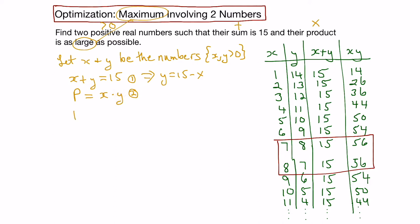That would leave us with P equals x times 15 minus x. Let's expand that, so we get 15x minus x squared. Distributing the x over the brackets gives us 15x minus x squared as our product function.